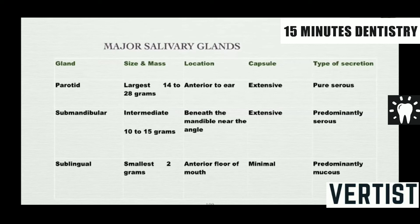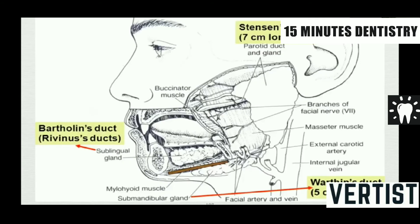The parotid gland opens by Stensen's duct, which is 7 cm long. The submandibular gland opens by Wharton's duct, which is 5 cm long. The sublingual gland opens by the Bartholin's duct, also known as the plica sublingualis.